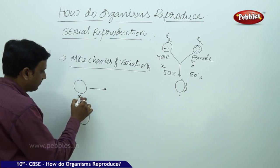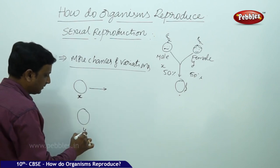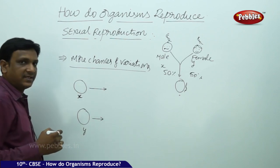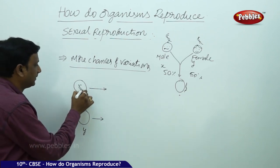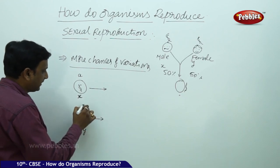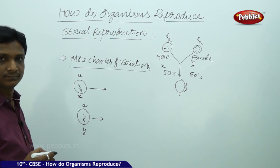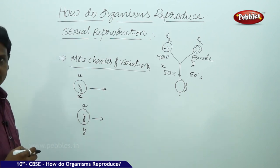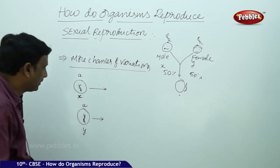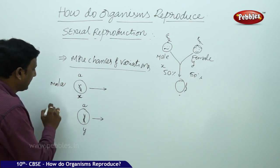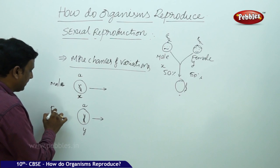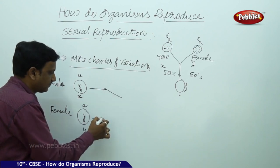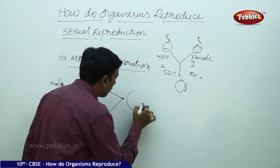Here, we consider there are two organisms X and Y. X contains the genetic material A, and Y contains genetic material A. This DNA is in the form of chromosomes in both. Two organisms are involved in the production of a new organism — male and female — giving rise to a new organism.